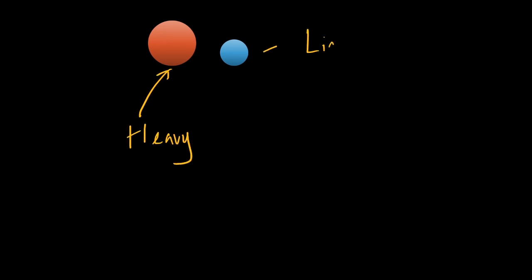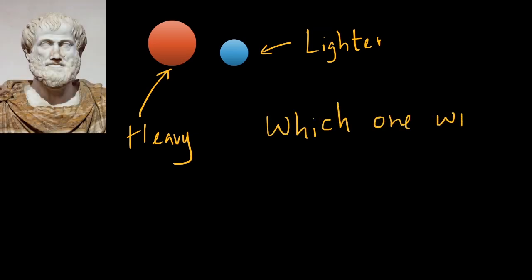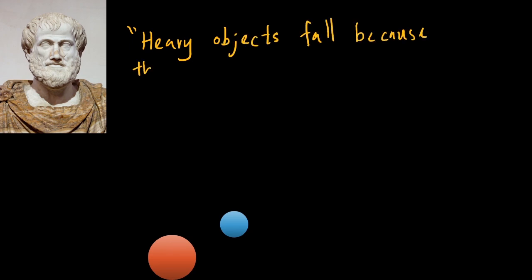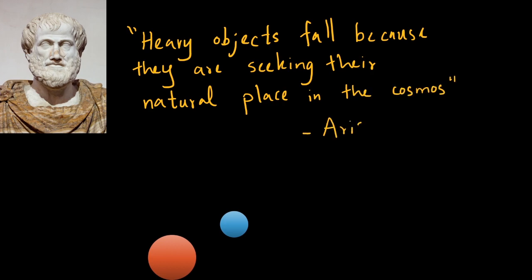The theory back then according to Aristotle was that the one which has the largest mass would fall first. The reason he pointed out was that heavy things have some seeking force in them in the cosmos, and that is why things fall faster, especially the ones which have larger masses.